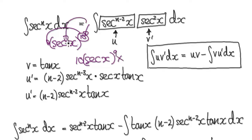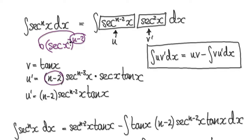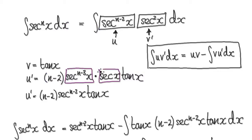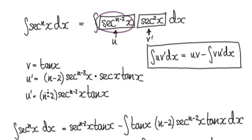So when u equals secant to the power of n minus 2, if you differentiate it — imagine it as secant x to the power of n minus 2. When you differentiate, the power comes down, giving secant to the power of n minus 3, times the derivative of the bubble itself, which is secant x tan x. You can then tidy this up: merge the secant terms together — tan is here and this secant expression is here. So u prime equals this combined expression.